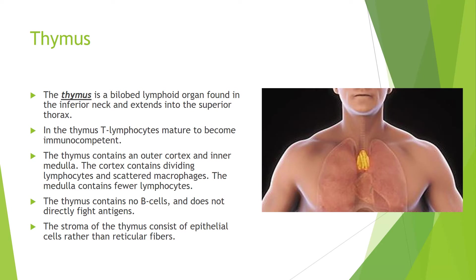The thymus is a bilobed lymphoid organ found in the inferior neck that extends into the superior thorax. In the thymus, T lymphocytes mature to become immunocompetent. The thymus contains an outer cortex and an inner medulla. The cortex contains dividing lymphocytes and scattered macrophages. The medulla contains fewer lymphocytes. The thymus contains no B cells and does not directly fight antigens. The stroma of the thymus consists of epithelial cells rather than reticular cells.